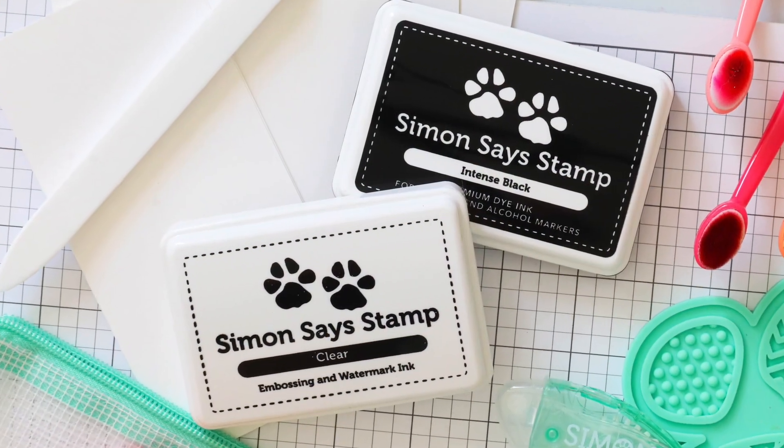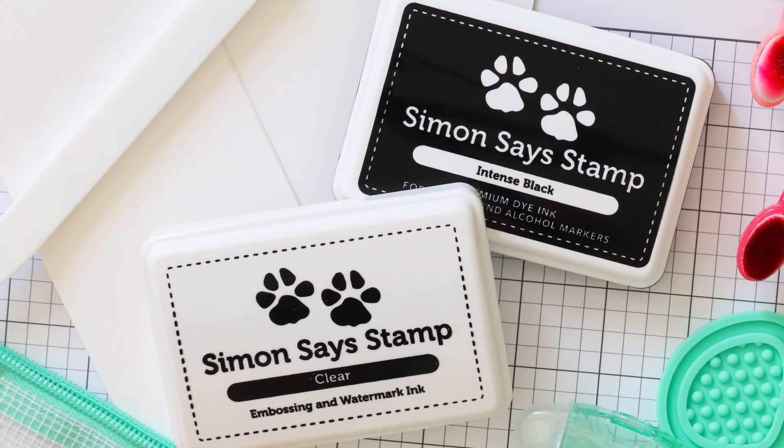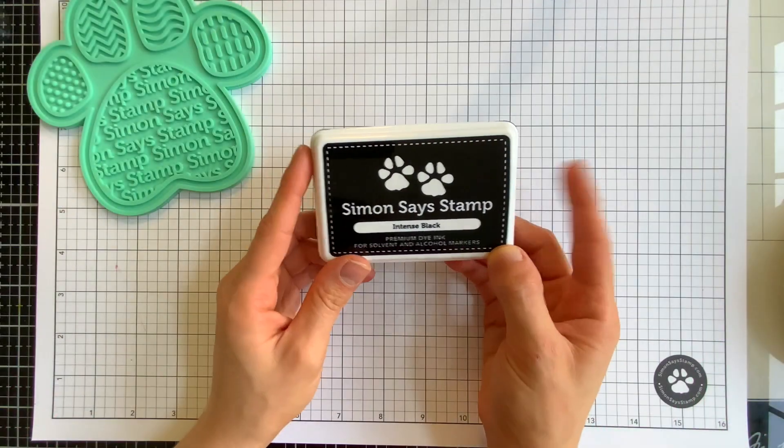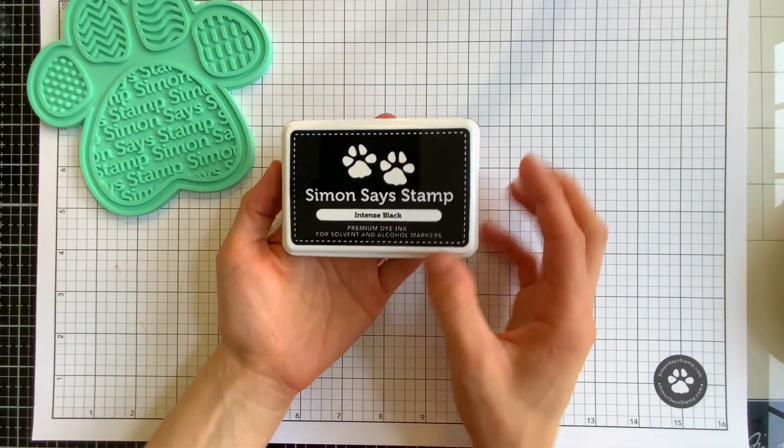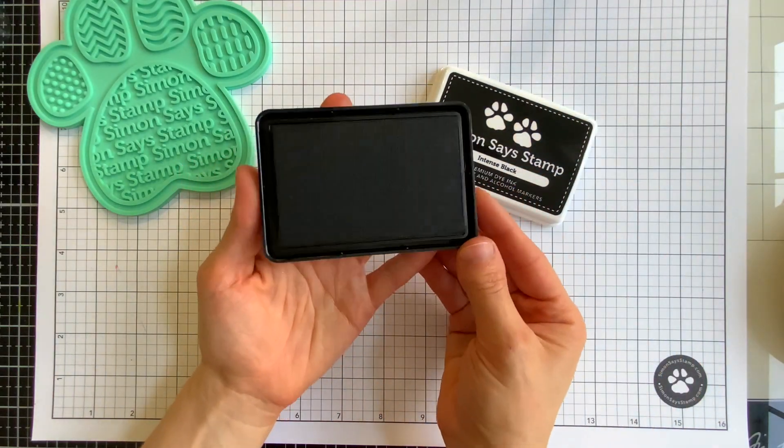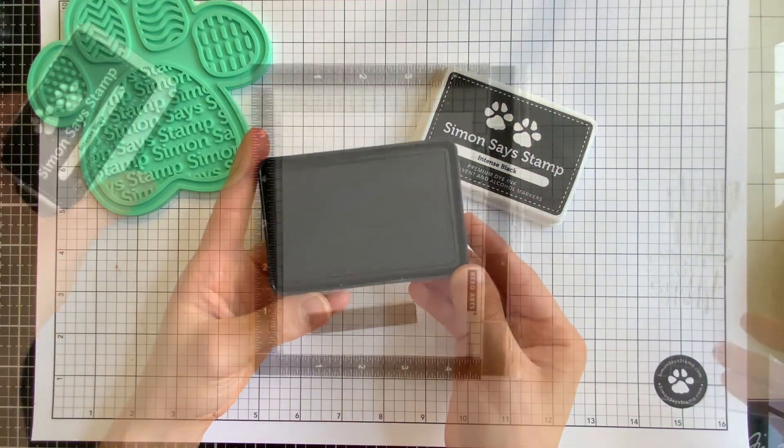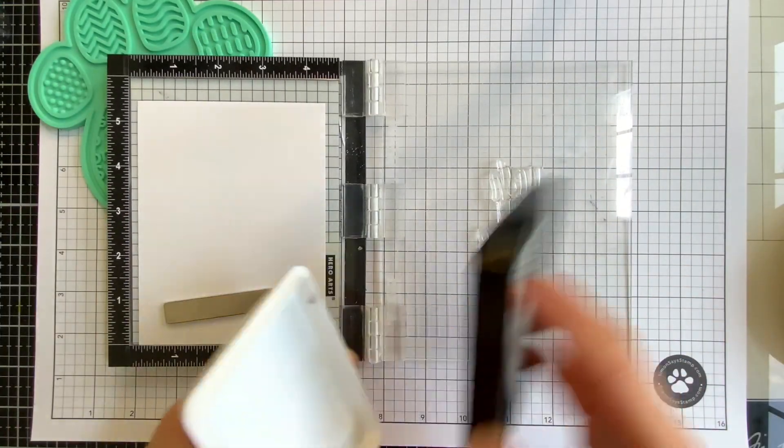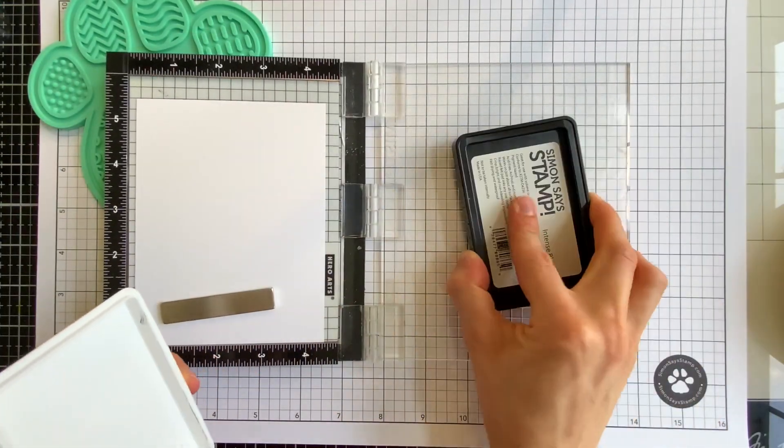Having high quality crisp black ink in your creative stash is so important. Our Simon exclusive intense black ink pad is not only archival, non-fading, and acid-free but it's also fast drying and waterproof and that means that you can use it with alcohol-based markers and inks,